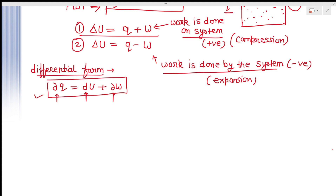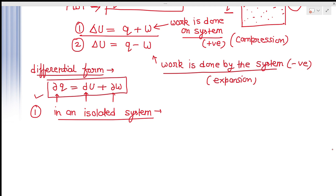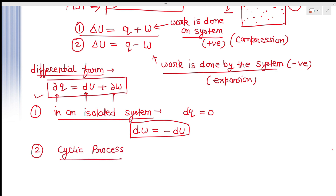For an isolated system under adiabatic conditions, no heat can be transferred between the system and surroundings, so δq = 0. Therefore δW = −dU. This means work is done at the expense of the internal energy — if work is done by the system, the internal energy of the system will decrease.